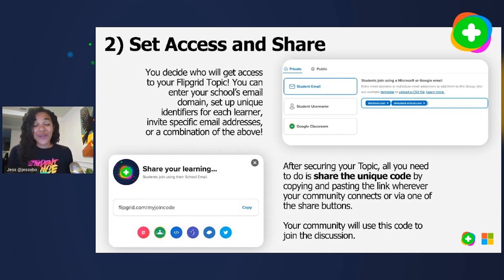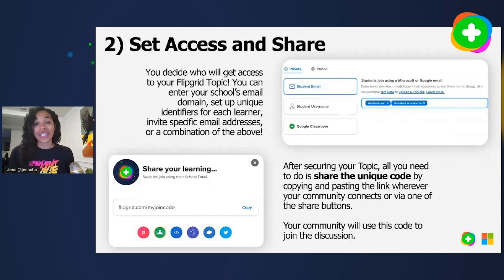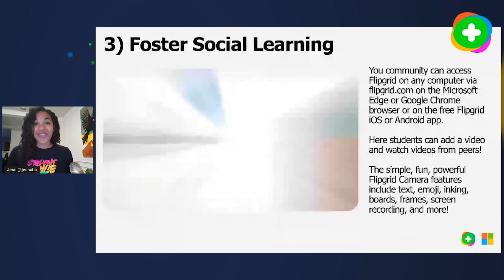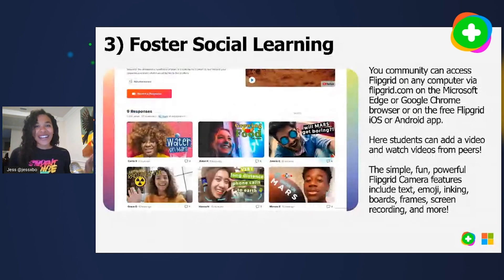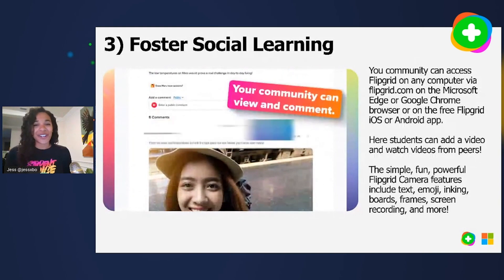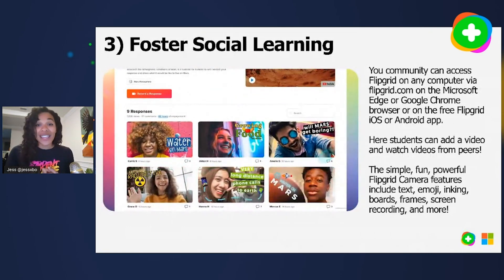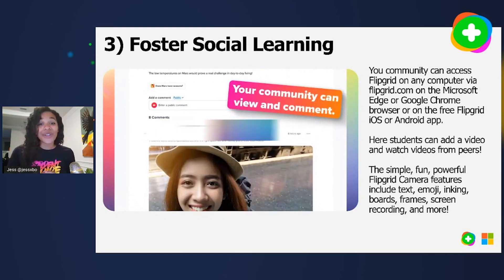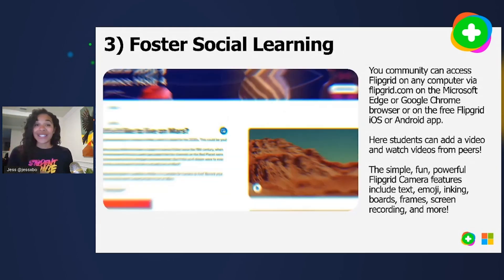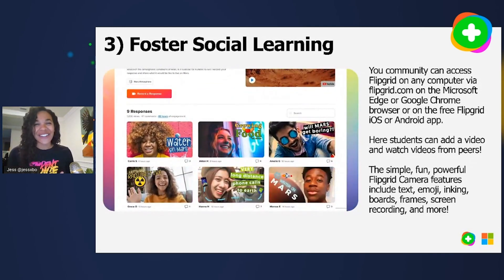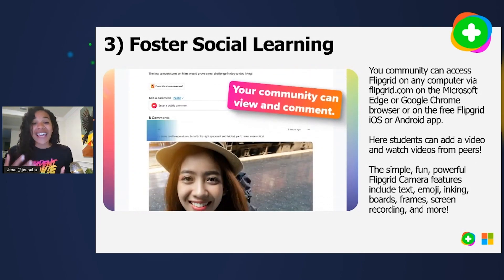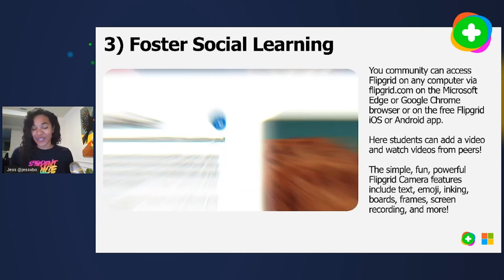Once you've set your access, you simply share it with your community. You'll get a join code for each topic and can share it in many different ways — or just copy and paste the join code wherever you communicate with students digitally. Then the best part happens — the magic. You get to foster social learning and see your students come alive sharing their unique voices. They can use Flipgrid.com on any web browser, or the free Flipgrid app on iOS, Android, or Chromebooks — completely free.